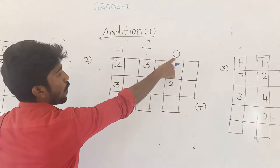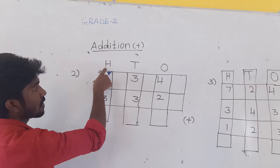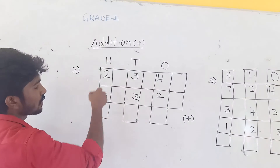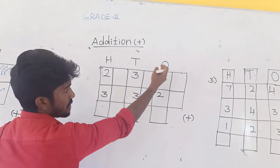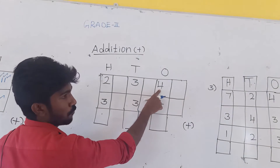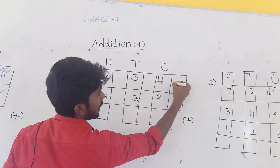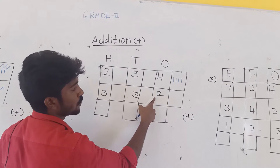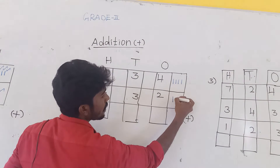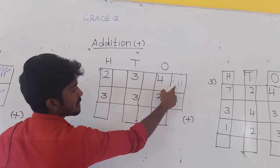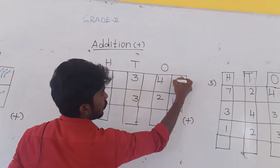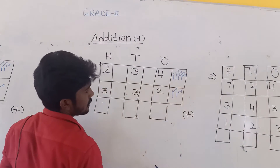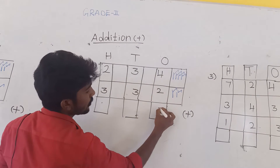Second sum. O means 1s, T means 10s, H means 100s. I will start with the 1s value. First number is 4, so draw 4 lines. Then the second value, draw 2 lines. Now add these lines: 1, 2, 3, 4, 5, 6. So 4 plus 2 is equal to 6.